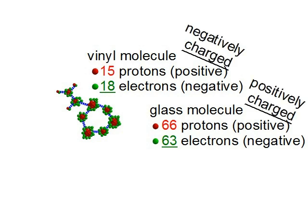Since the vinyl now has more negatively charged electrons than it has positively charged protons, the vinyl is negatively charged. And since the glass now has more positively charged protons than it has negatively charged electrons, the glass is positively charged.